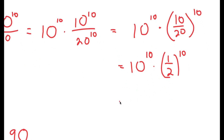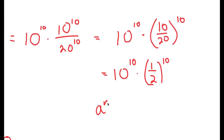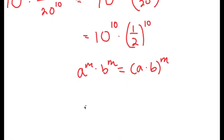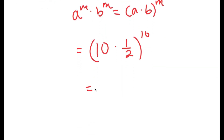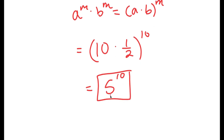Finally, if I have something in the form a to the power of m times b to the power of m, this is equal to a times b to the power of m. So this is going to turn into 10 times one half to the power of 10, which is equal to 5 to the power of 10. If you liked the video, please make sure to leave a like, subscribe, and share this with any friends or family.